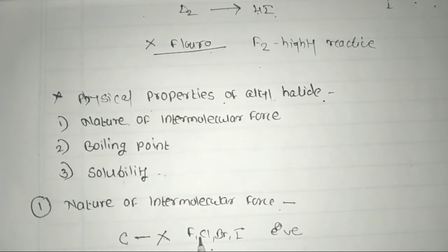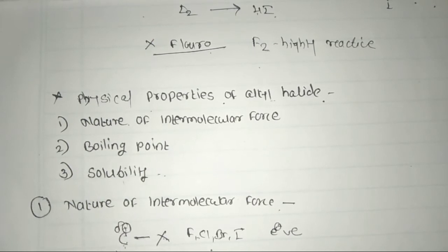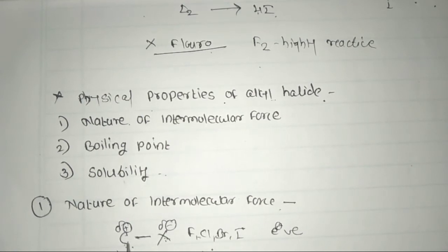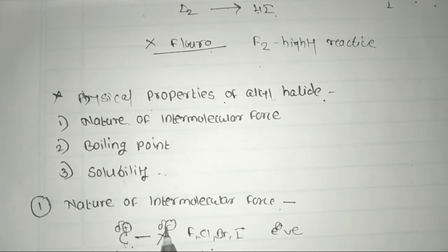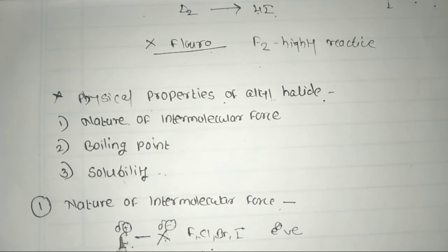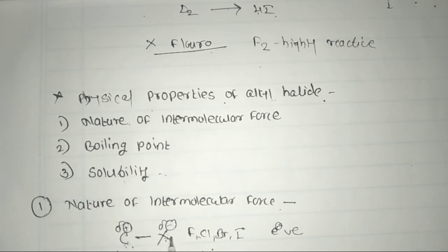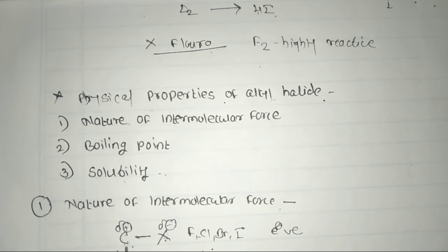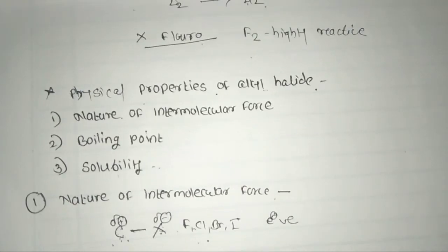Because halogens are more electronegative than carbon, the carbon atom carries a partially positive charge and the halogen atom carries a partially negative charge. Therefore, the bond between carbon and halogen is a polar covalent bond. Because partially positive and partially negative charges are present, alkyl halides and aryl halides are moderately polar compounds.